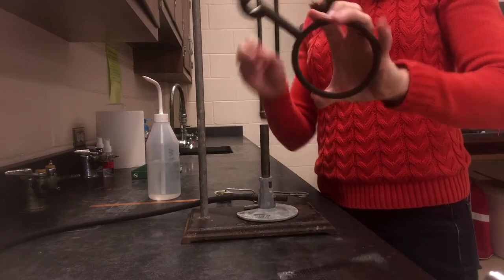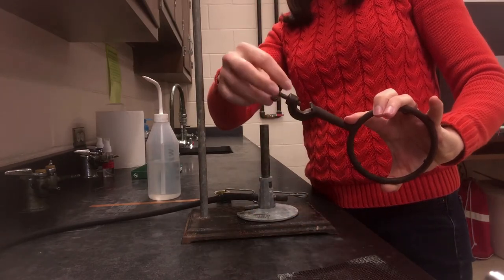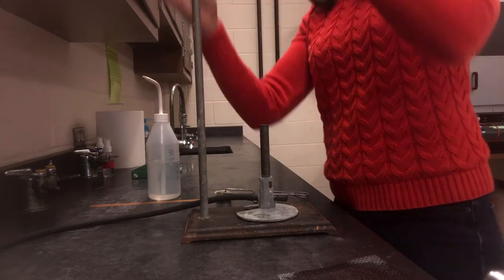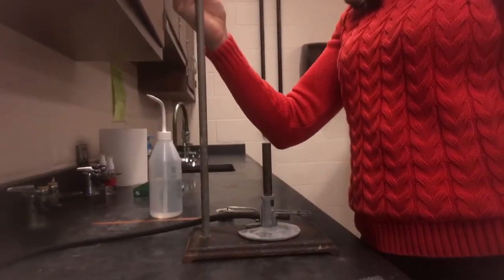Then you'll take your metal ring, and these have a screw clamp at the back. Make sure it's open enough to go over the top and slide over the top. Slide it over the top of the ring stand and slide it down.